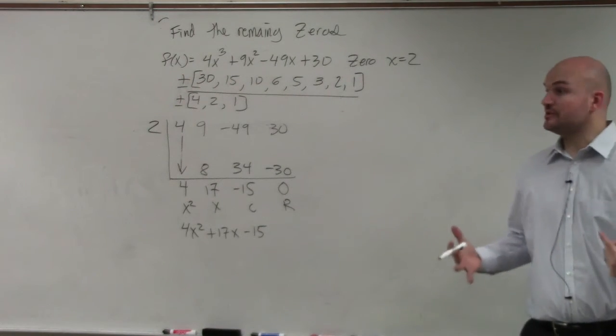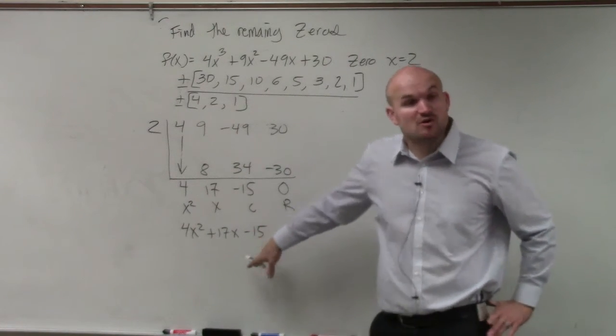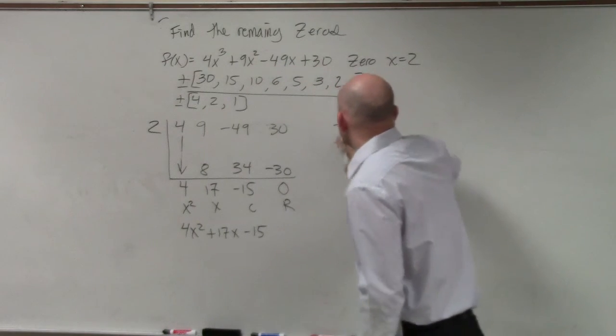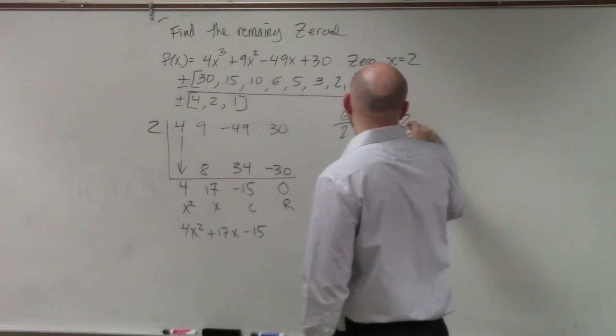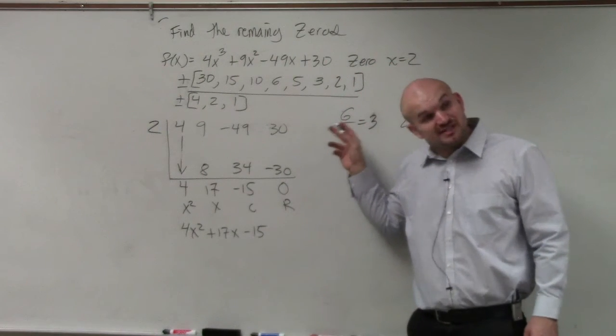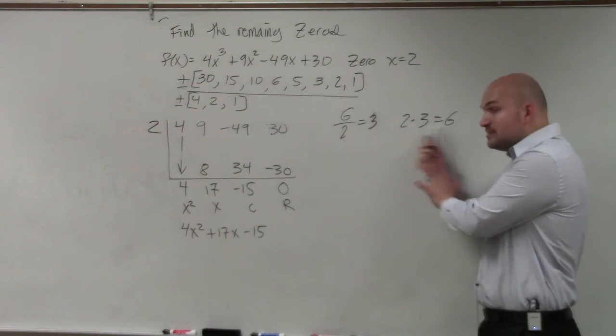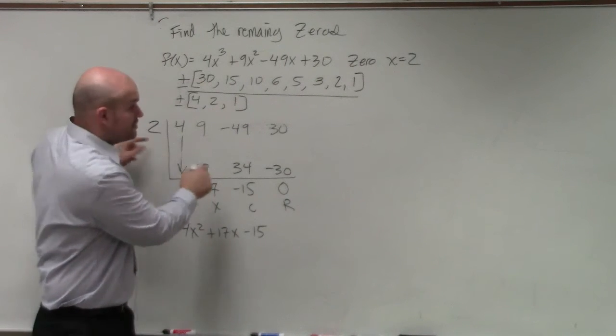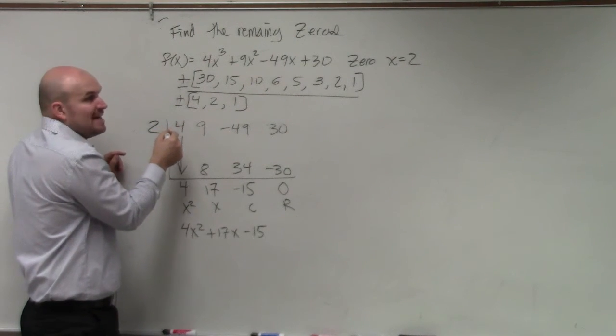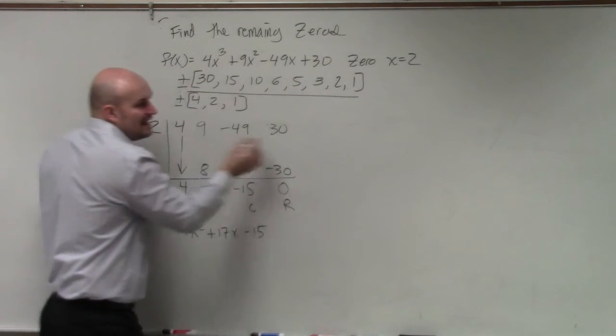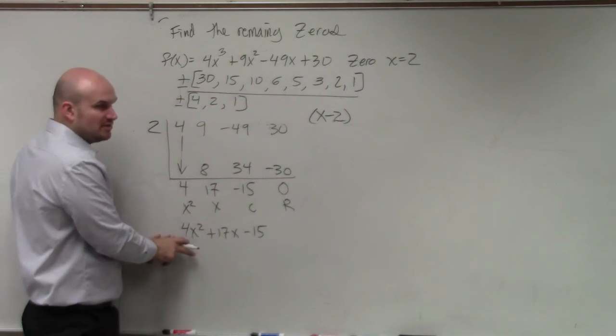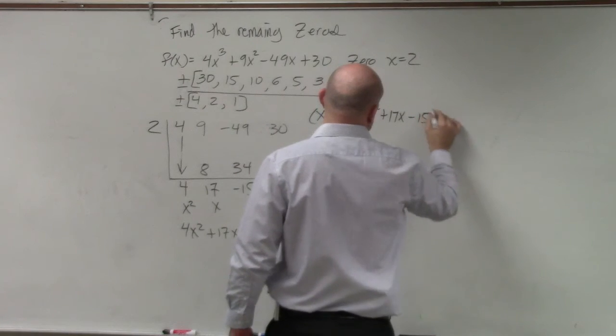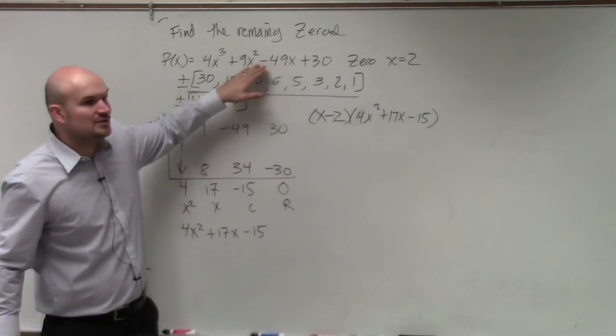Now again there's a couple things that's really important. This is the quotient right, but this quotient is also a factor, right? Because again I can't stress this enough. 6 divided by 2 equals 3. We can rewrite that as a product: 2 times 3 equals 6. Whatever you're dividing into, if it evenly divides, it's a factor. Whatever the quotient is, is a factor. You can multiply your factors. Well so what we have is, does 2 evenly divide into this polynomial? As a zero, so that means if 2 is a zero, what's the factor? x minus 2. And then my quotient is also a factor: 4x squared plus 17x minus 15. This times this gives you that.